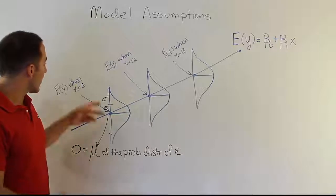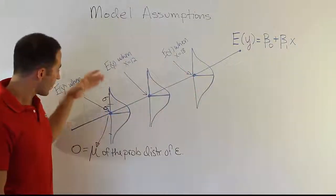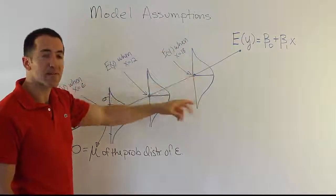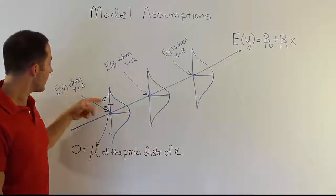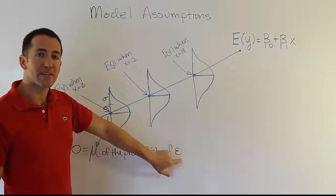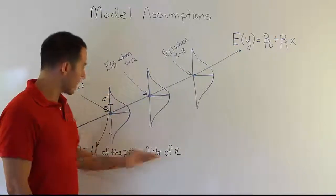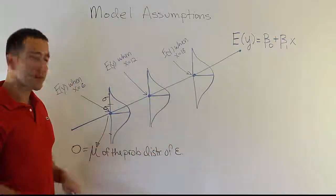And what we're going to notice is that each of these bell curves that are represented here, I've tried to draw them as best I could to be the same size. And that means that there's a constant standard deviation for the error term. In other words, the variance for the error term or the standard deviation for the error term is constant, no matter where you are on the x-axis.